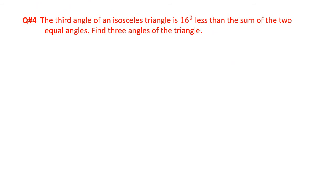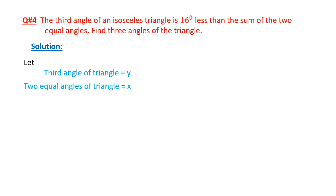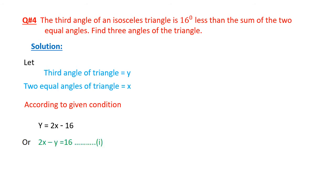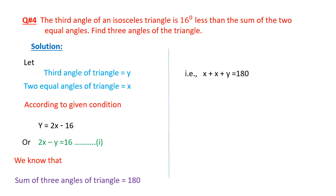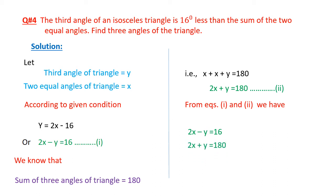Question number 4: the third angle of an isosceles triangle is 15 degrees less than the sum of the two equal angles. Find the three angles of the triangle. Let the third angle equal y and the two equal angles each equal x. By the given condition, y equals 2x minus 16, or 2x minus y equals 16. Since the sum of three angles equals 180 degrees: x plus x plus y equals 180, so 2x plus y equals 180. From equations 1 and 2 we have these two equations. Dear students, you can solve this yourself by any method.